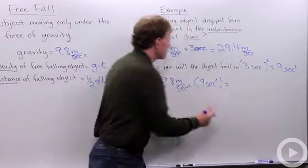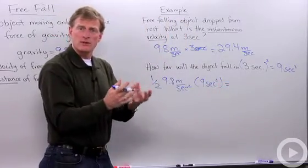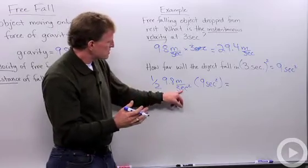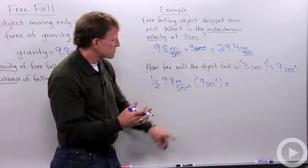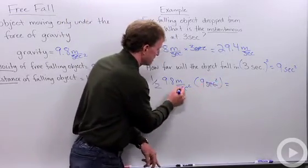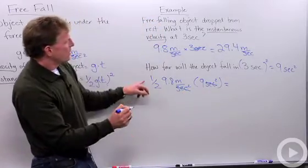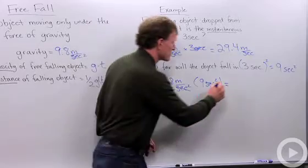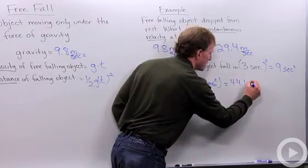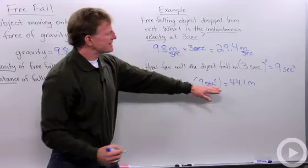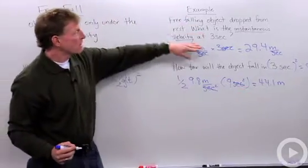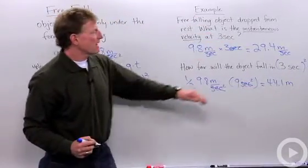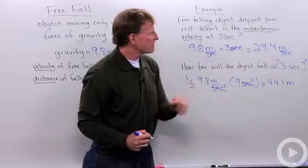And again, units can trip you up and units kind of get confusing, but I've got seconds squared in the denominator and seconds squared in the numerator, so I can cancel that. And I have one-half times 9.8 times 9 seconds, and that equals 44.1 meters. And that's the distance that the object has fallen in that three seconds. At that three seconds, that is the velocity.